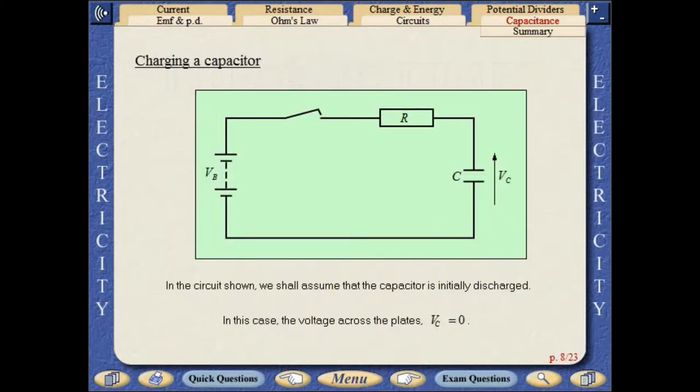In the circuit shown, we shall assume that the capacitor is initially discharged. In this case, the voltage across the plates, VC, equals zero.